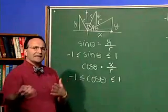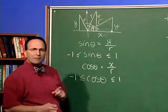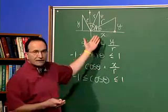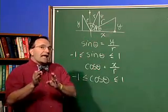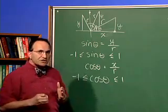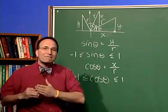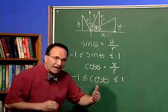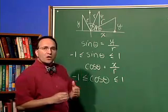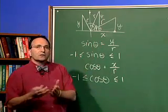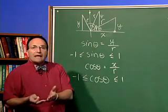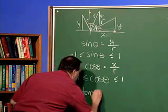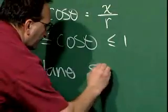What about the tangent of theta? The tangent of theta, remember, is y over x. The values for y and x vary greatly based on the angle theta. When we take those ratios, it turns out that we can get any real number for the value of the tangent of theta. Because when you take the ratios of y to x, not only will we get fractions, but we will also get mixed numbers. So the range for tangent of theta is the set of real numbers.